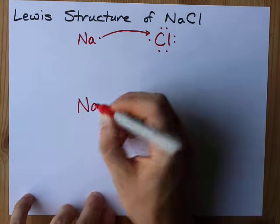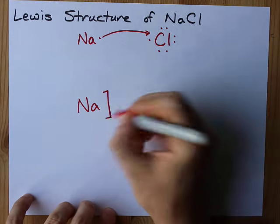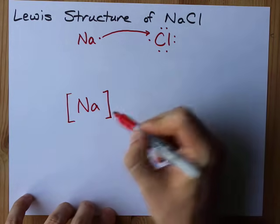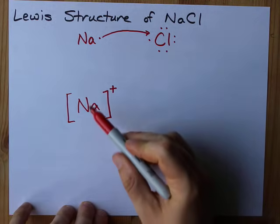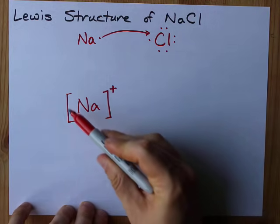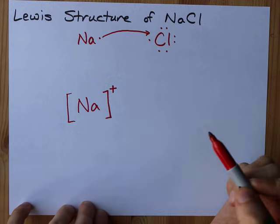Na now has no electrons around it. So because it has one fewer electron than it started with, it will have a plus charge. The sodium, no electrons remaining in its valence shell, with a positive charge.